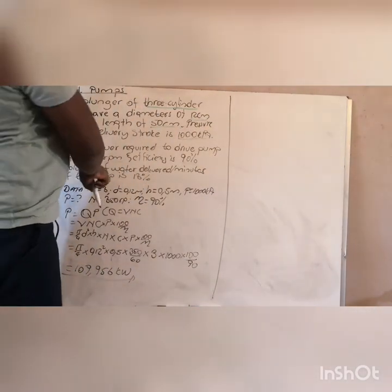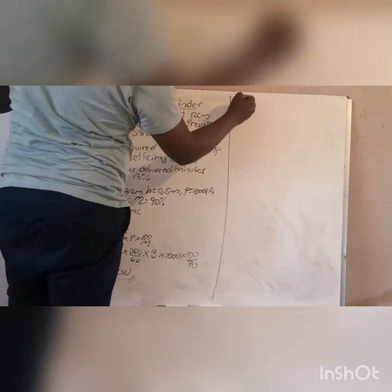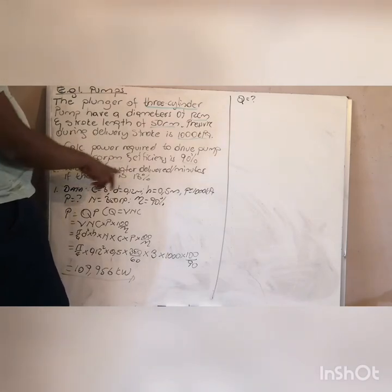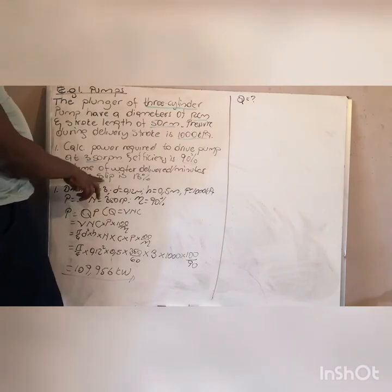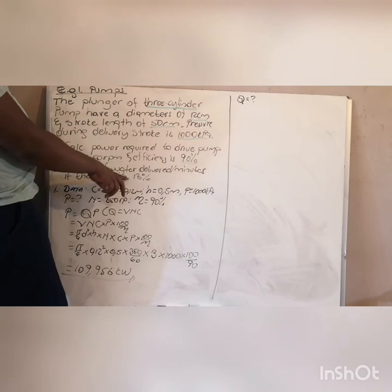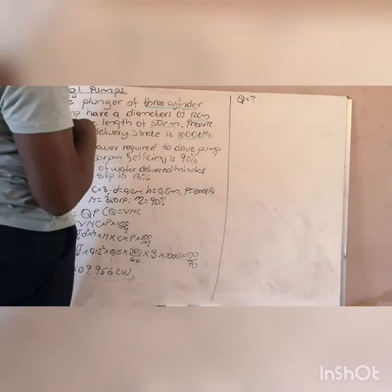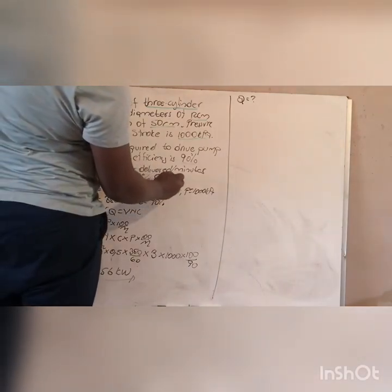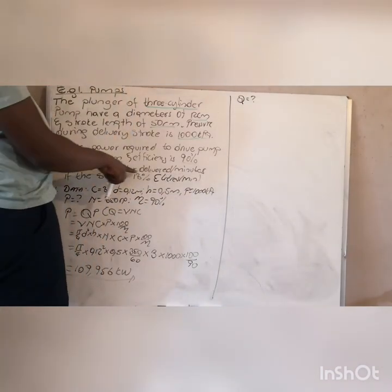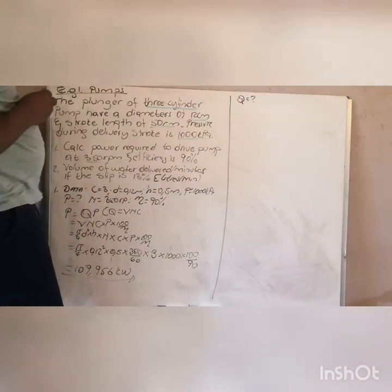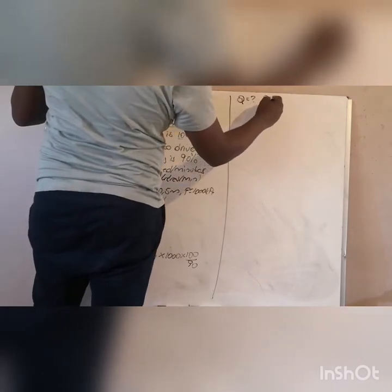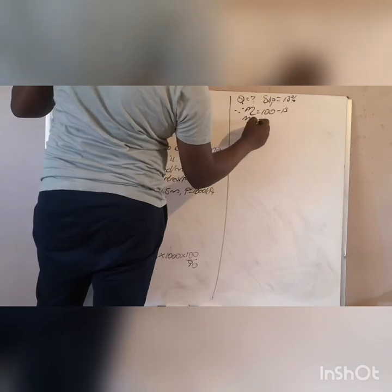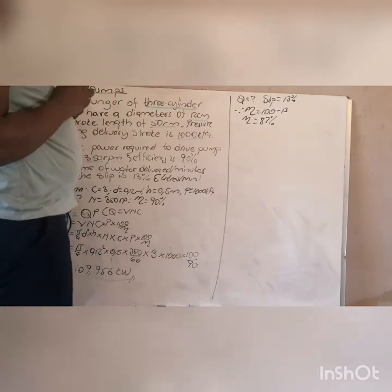For the second part, they want the volume of water delivered per minute in liters per minute. They say the slip is 13%. Therefore, your efficiency is 100 minus 13, which gives you an efficiency of 87%. So you use 87% efficiency. The slip gives you the efficiency. Your rotational frequency stays in rev per minute since they want the answer in per minute.